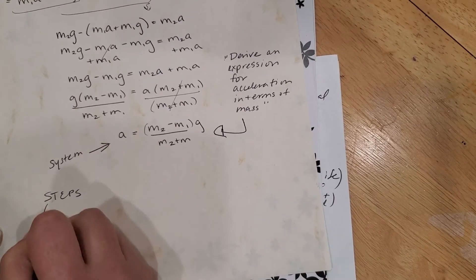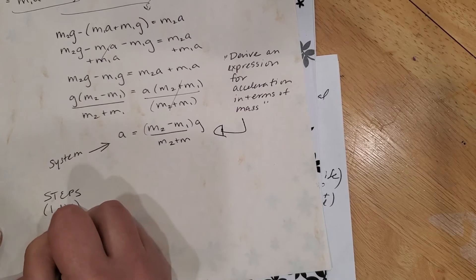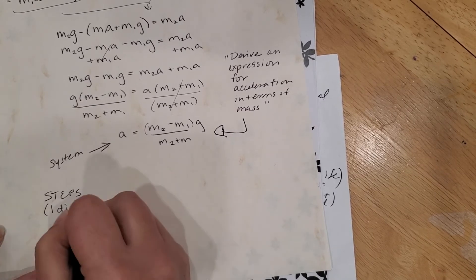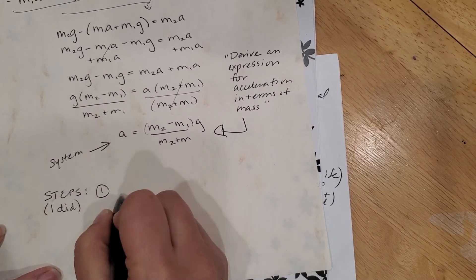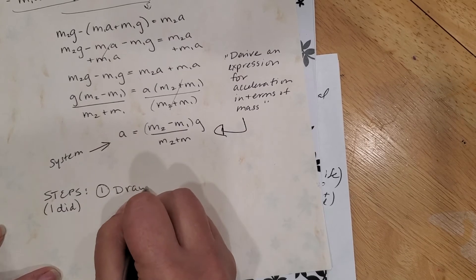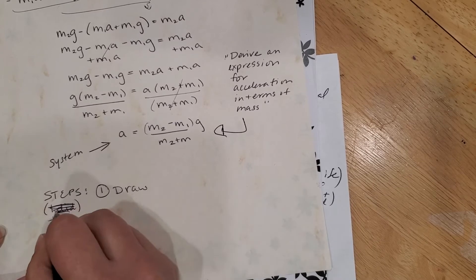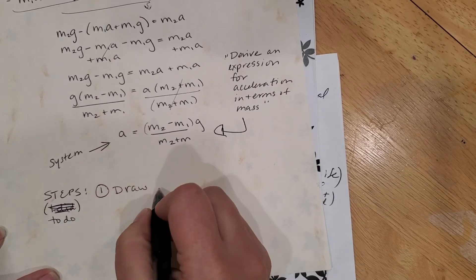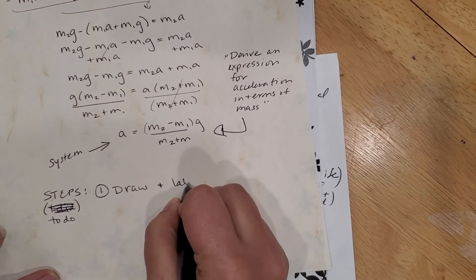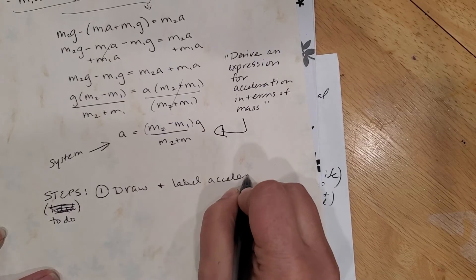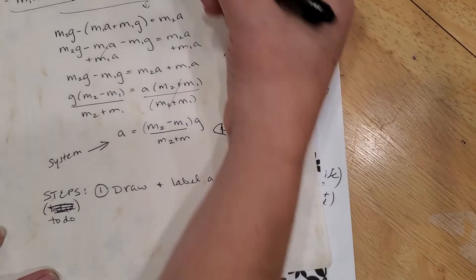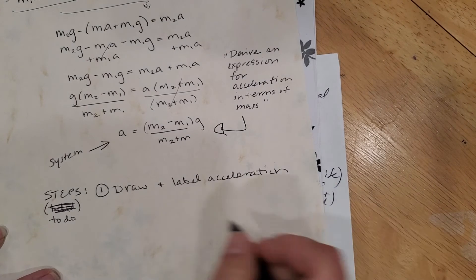There's two ways to do steps. I'm gonna write these ones in the past tense so this is what I did. Number one, I, let's see draw, oh this is a to-do list. I'm gonna make a to-do list. Draw and label acceleration, that's the first thing we did up here.